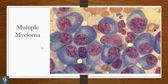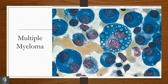Multiple myeloma is a neoplastic disorder of plasma cells. Appreciate the structure of the plasma cell: eccentric nucleus, perinuclear halo, and basophilic cytoplasm. You can see multiple plasma cells here. Even atypical forms of plasma cells can be seen in multiple myeloma, which you can appreciate in the next slide.